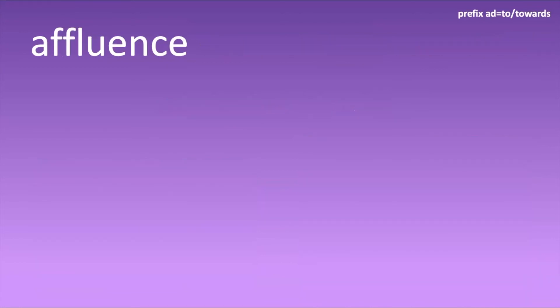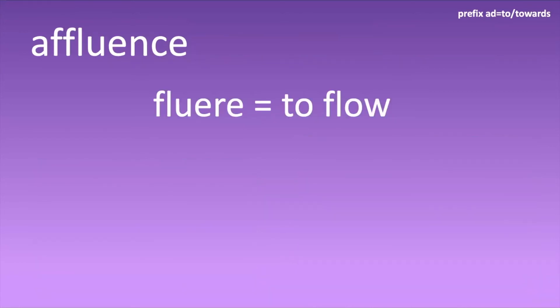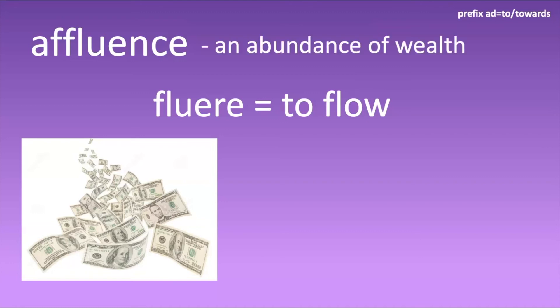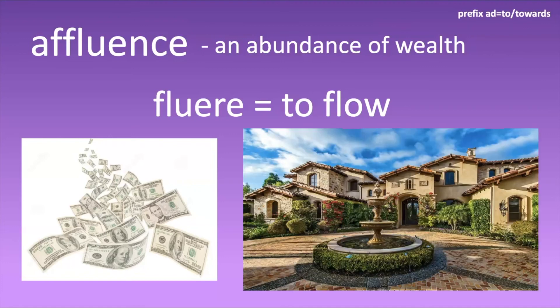'Affluence' comes from flow — specifically referring to cash flow. Affluence is an abundance of wealth: you just have money flowing toward you. For example, this would be the home of an affluent person — this is an example of affluence.